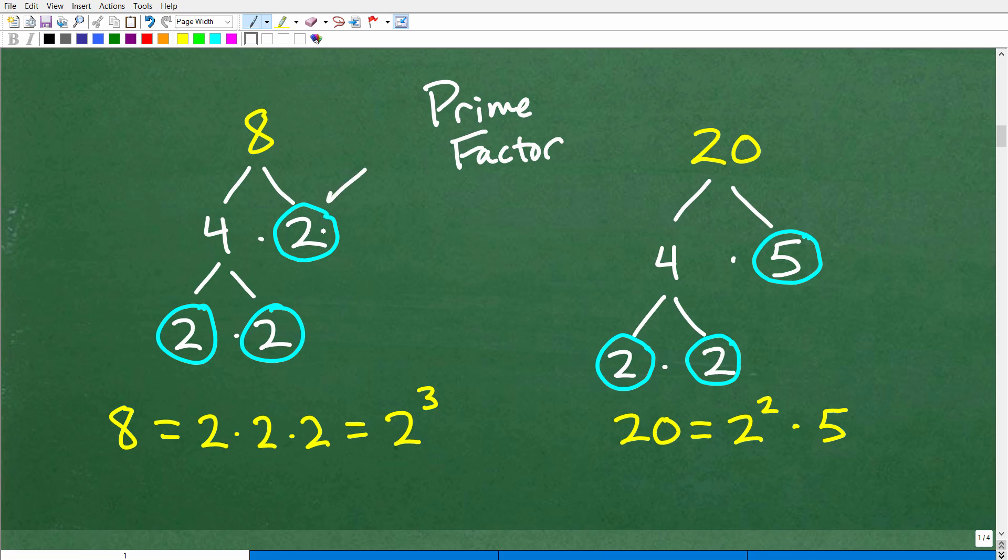We're going to circle that 2. We have one prime factor right here, but 4 is not prime, so we need to keep going. 4 is the same thing as 2 times 2. So this is prime, this is prime, and this is prime. All three of these numbers times each other is 8. So 8 is 2 times 2 times 2, which we express as a power. This is 2 to the third power. 2 to the third power just means we're taking 2 and multiplying it by itself 3 times. That is prime factoring a nice little easy number.